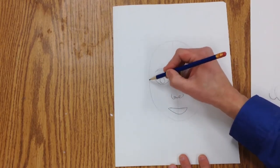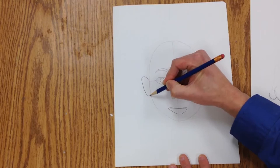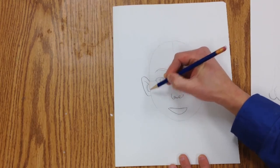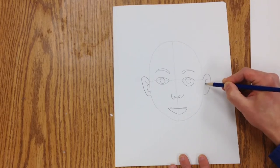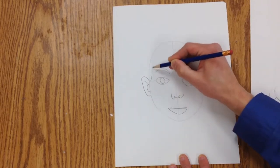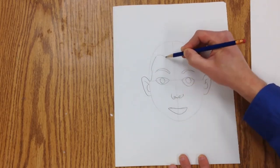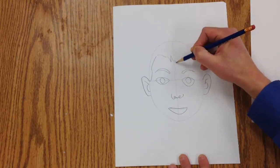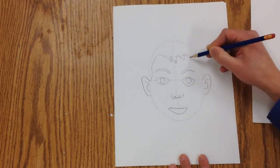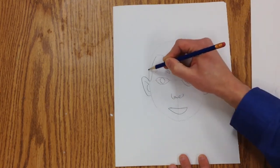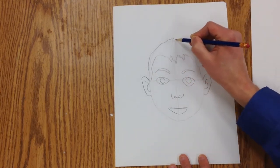And then for the ears, they're going to line up with your eyes. I just make a letter C. And your hair - if you're a boy and it's short like mine, it's going to come down a little bit. You're still going to see the top of the hair there, and some of it's going to come out on the top.